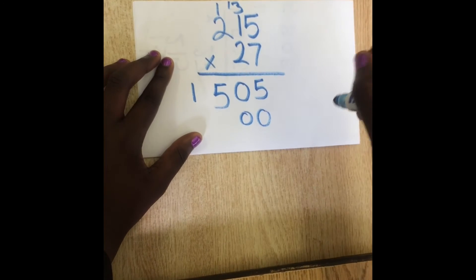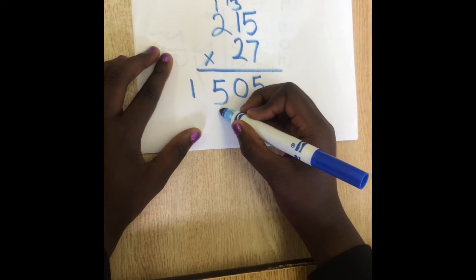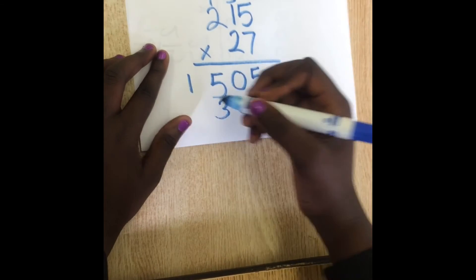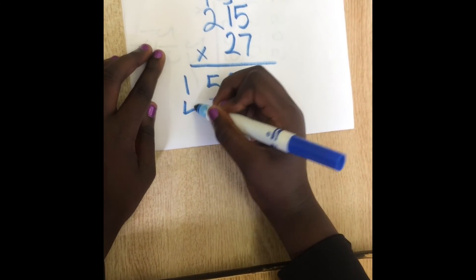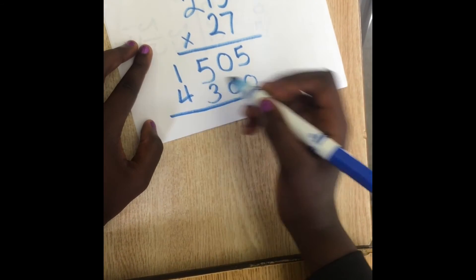Then you do 2 times 1 which gives you 2 and plus 1 gives you 3. Then you put the 3 under the 5. And then you do 2 times 2 which gives you 4 and you put the 4 under the 1.